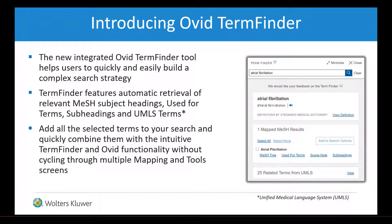The new integrated Ovid Term Finder tool quickly helps users to build a complex search strategy. Automatic retrieval of relevant MeSH subject headings used for terms, subheadings, and added UMLS terms is achieved in seconds.